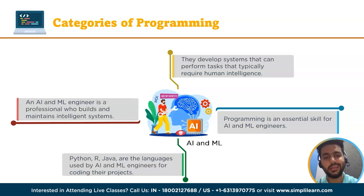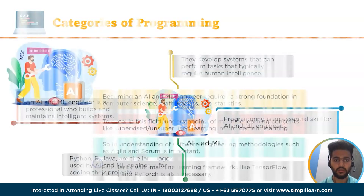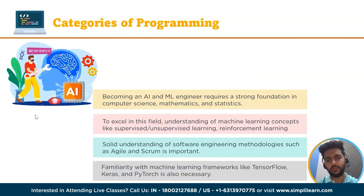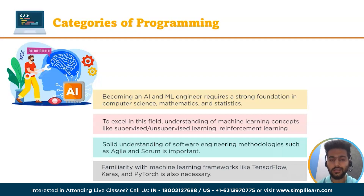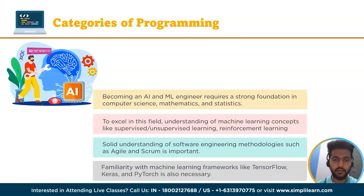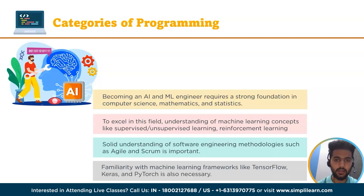To become an AI and ML engineer, you need a strong foundation in computer science along with mathematics and statistics. You should have a good understanding of programming languages such as Python, Java and C++. To excel in this field, you also need a good understanding of machine learning concepts such as supervised and unsupervised learning, reinforcement learning and deep learning. You should also have experience working with popular machine learning frameworks such as TensorFlow, Keras and PyTorch. Becoming an AI and ML engineer requires a combination of technical knowledge, analytical thinking and practical experience.